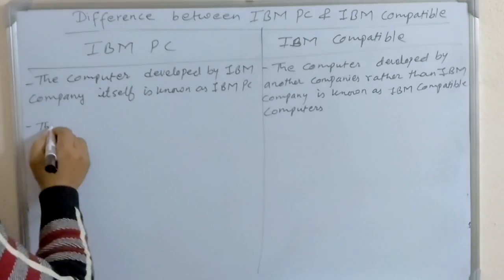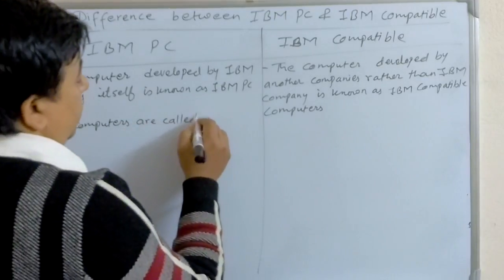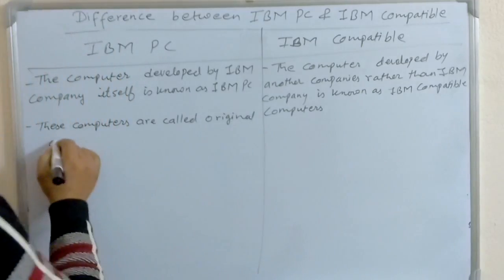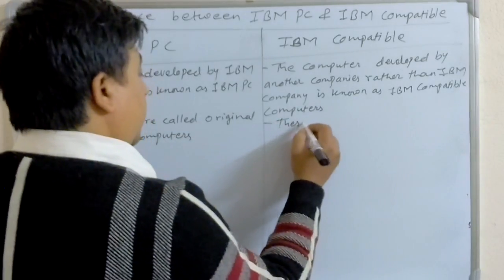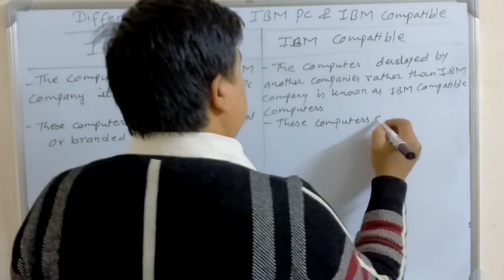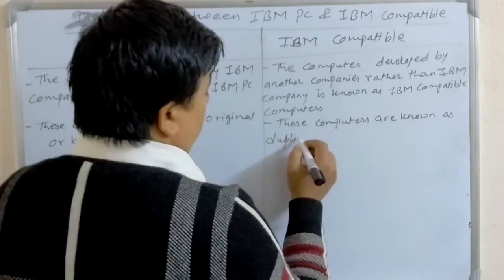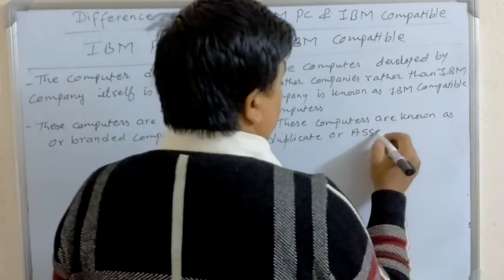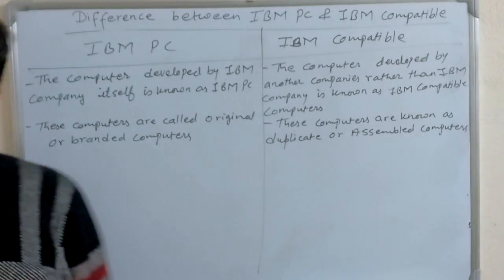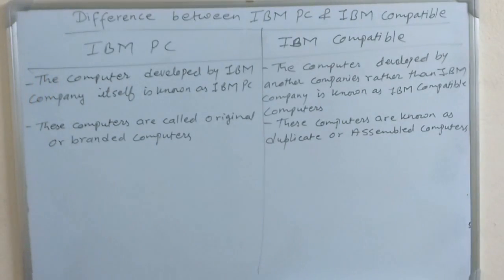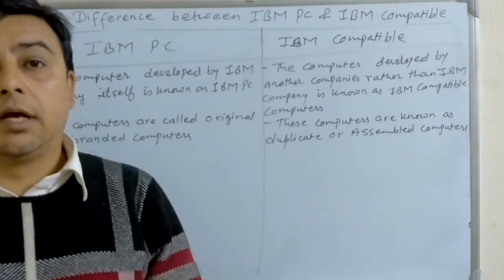IBM PC are called original or branded computers, whereas IBM compatible computers are known as duplicate or assembled computers.